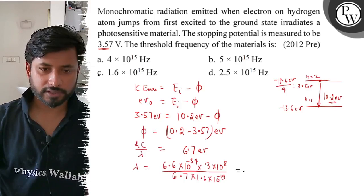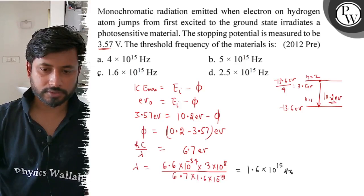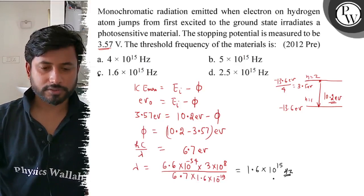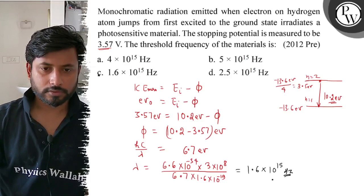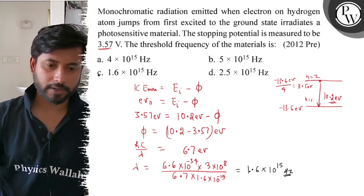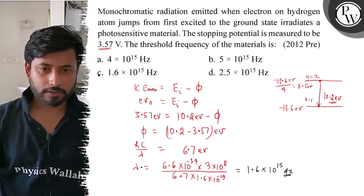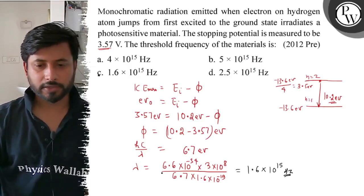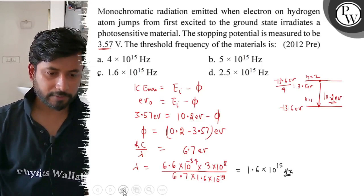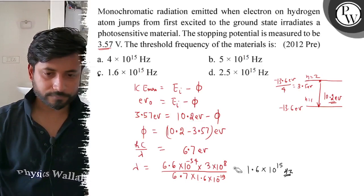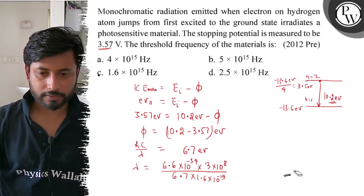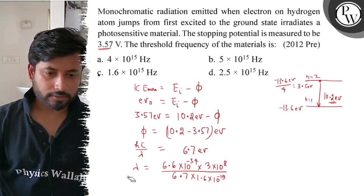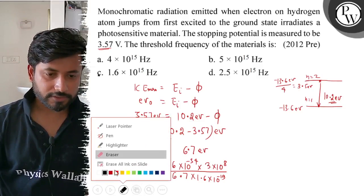Lambda value is 1.6×10^... So threshold frequency, we have to find from lambda. Lambda relates to frequency.